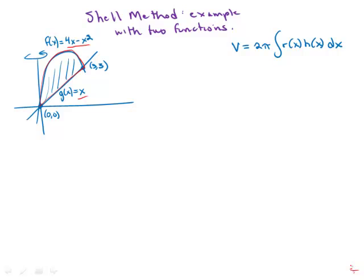So again, using shell method, we know that we're rotating around the y-axis. So we know that r of x just equals x.